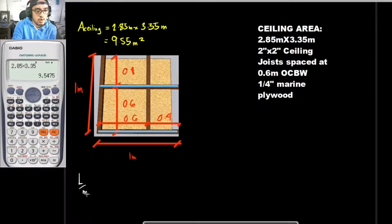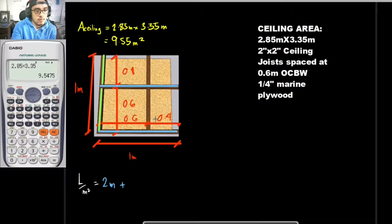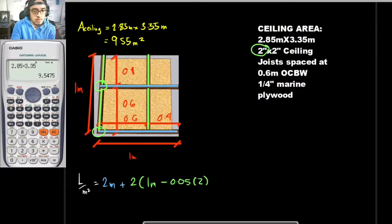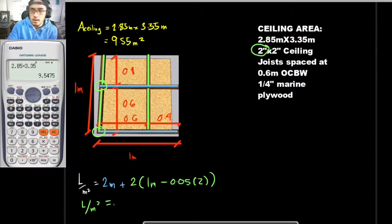For the length per square meter: that is 2 meters plus 2 meters for the pieces running one way. Then, for the green-marked pieces running the other way, we have 2 times the quantity of 1 meter minus the thickness of the lumber. Since we are using 2-inch lumber for the ceiling, that is 0.05 meters. So the formula is: 2 + 2 × (1 − 0.05) × 2.